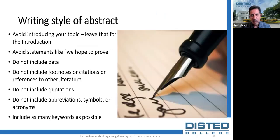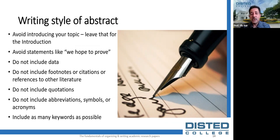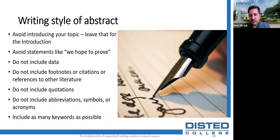An abstract is a summary — it is not an introduction. Some people write an abstract like an introduction; avoid introducing your topic, as that is for the introduction chapter. Avoid statements like 'we hope to prove' — it has to be clear what you intend to do or achieve. Don't be vague. An abstract is also not an essay outline — don't give an outline of what each chapter covers.